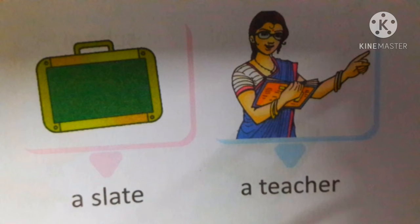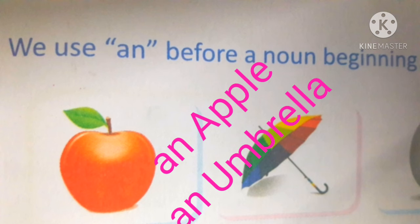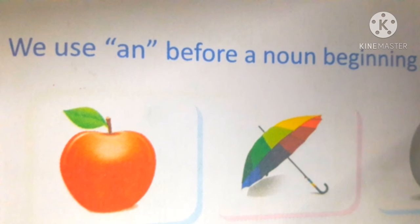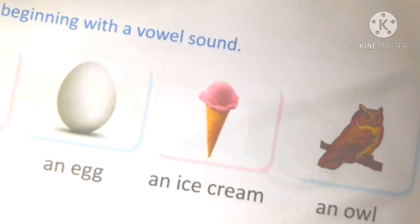We use AN before a noun beginning with a vowel sound. An apple, an umbrella, an egg, an ice cream, an owl.